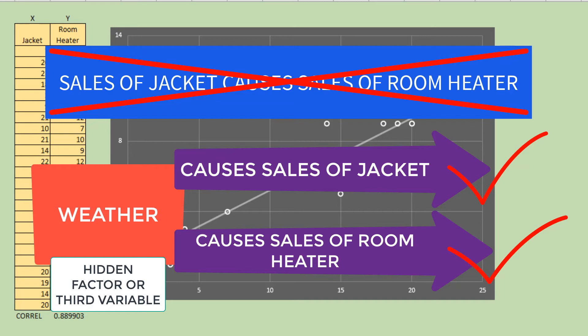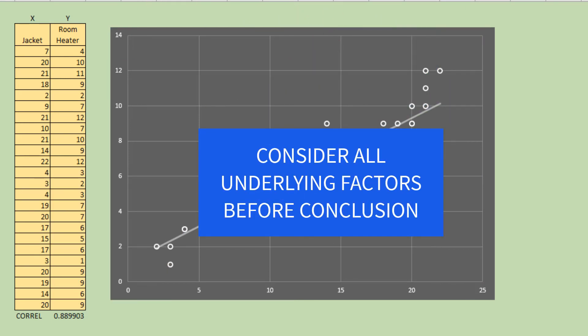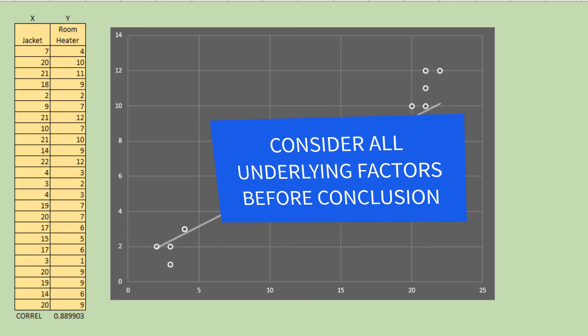During winter season, people buy jackets to protect their body. During winter season, people usually buy room heaters to adjust temperature of their house. In other words, consider underlying factors before coming up with the conclusion.